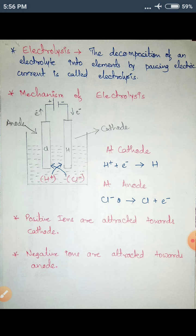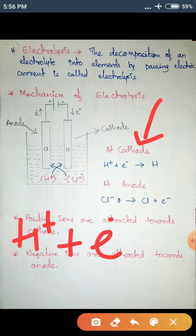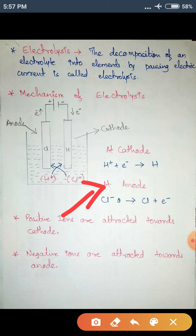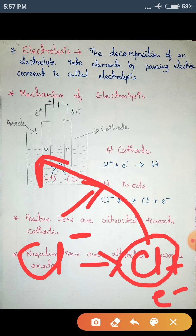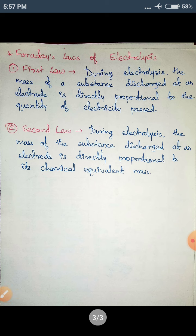At cathode, the H+ ion arrives and an electron comes from the battery. They undergo a reaction and we get pure hydrogen. At the anode, chlorine is attracted; Cl- has negative charge, it goes there, liberates an electron, and chlorine is accumulated on the anode. Therefore on separate electrodes we get chlorine and hydrogen. This is the mechanism of electrolysis.